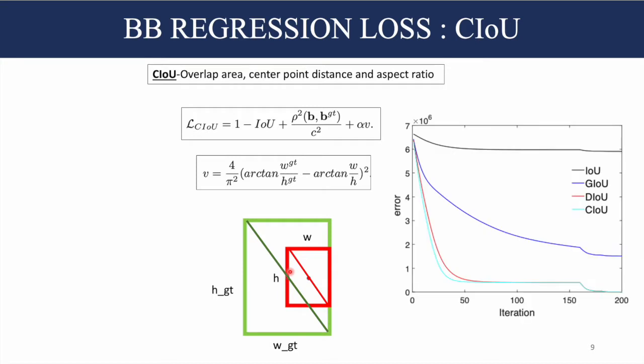Comparing all the losses: IOU performs poorly, GIOU is better, but DIOU and CIOU give very fast convergence over iterations and are definitively better metrics. Thank you — please like and subscribe to the channel for more informative videos.